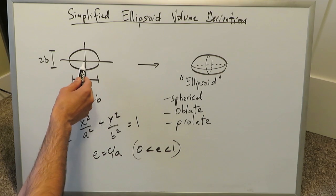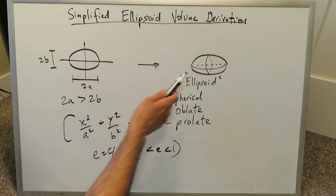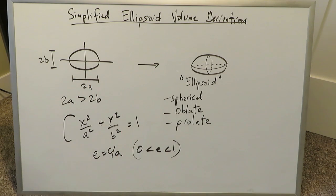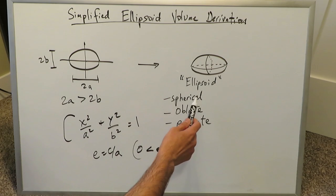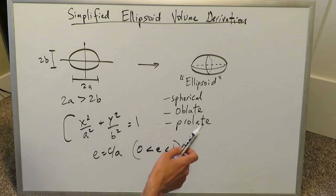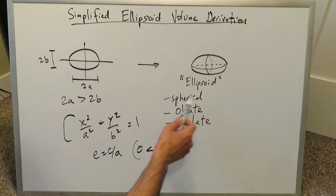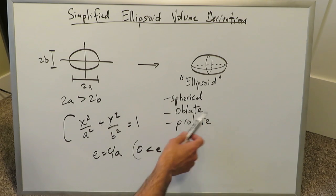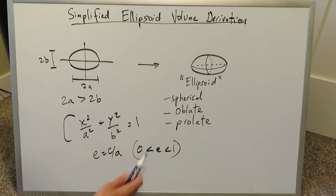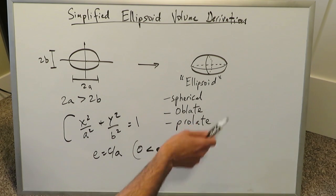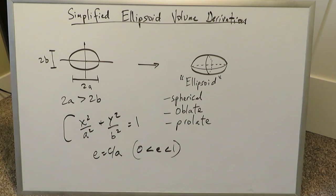If you give this ellipse a three-dimensional nature, you end up with an ellipsoid. There are several types of ellipsoid solids out there: spherical, oblate, and prolate. We don't have to get too fancy with terminology, but just know that there are several types of ellipsoids.